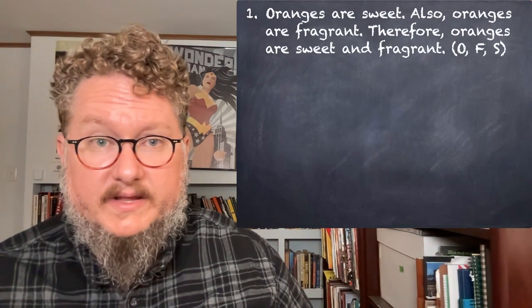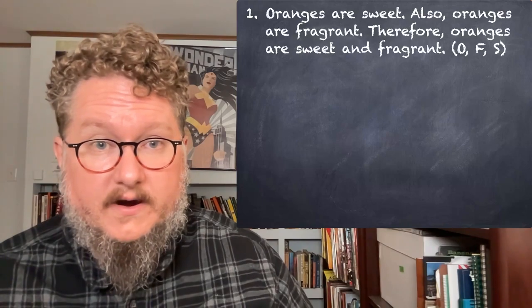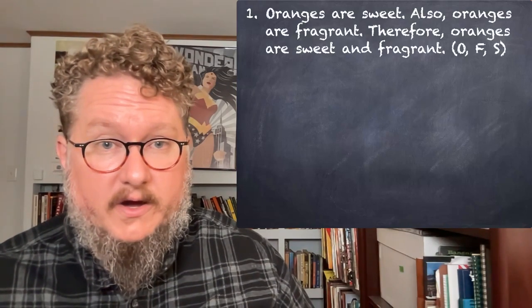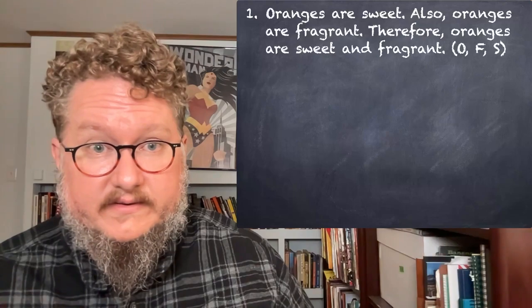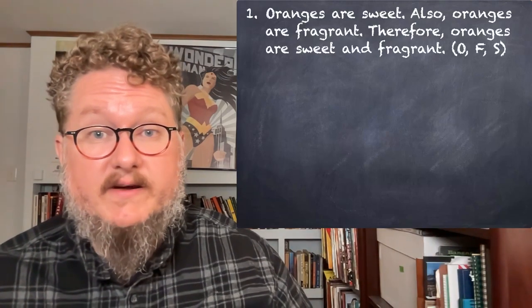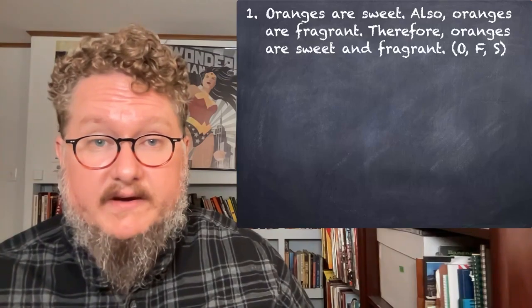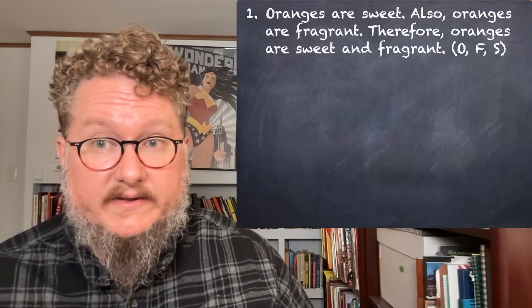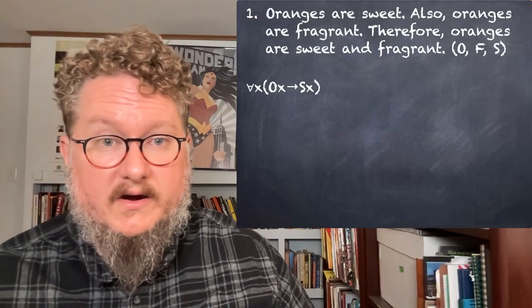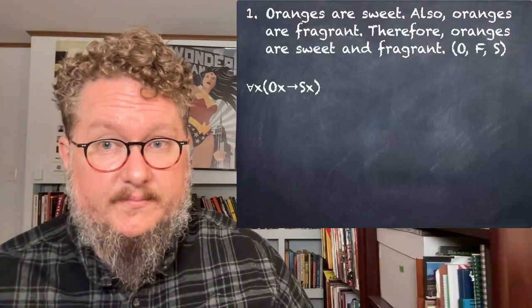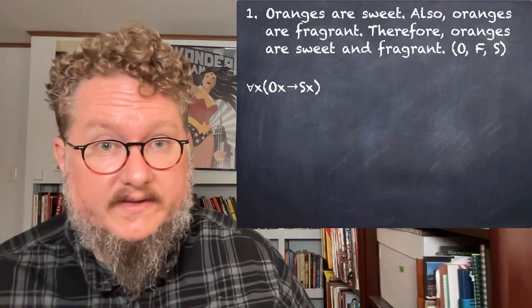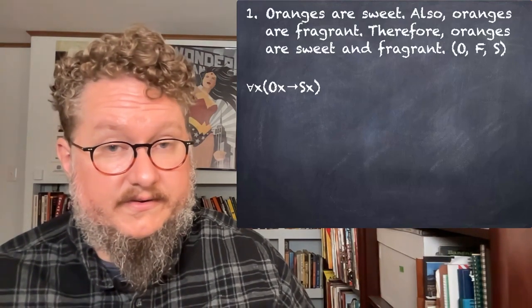First, let's start with number one. Our argument is: oranges are sweet — we're using O for orange and S for sweet — also, oranges are fragrant, using F for fragrant. So this is how I would translate this argument: oranges are sweet, which is unqualified — it's not some oranges are sweet, it's all oranges are sweet. All oranges are fragrant.